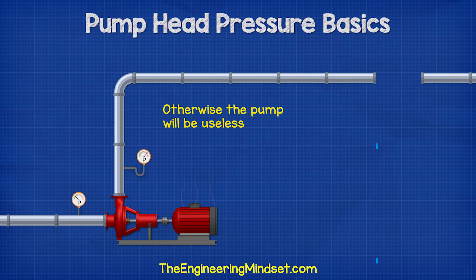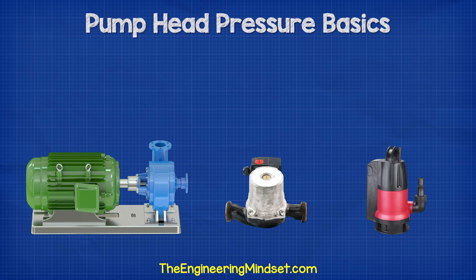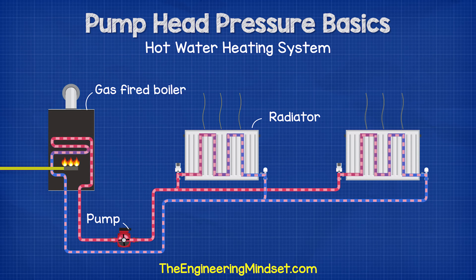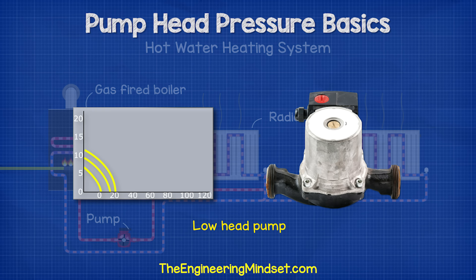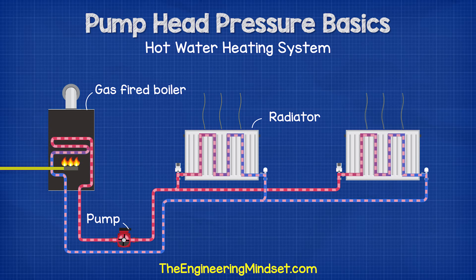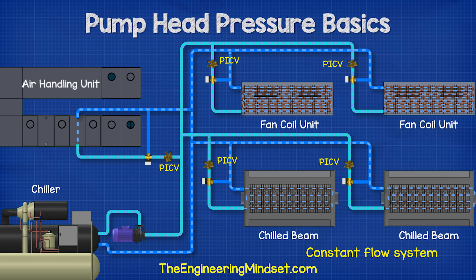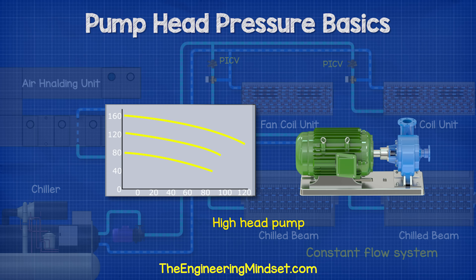Otherwise, we're not going to get any liquid out the other end. When we look at pump charts, we'll find pumps ranging in head and flow rate. For example, when we look at a small domestic heating system with a few fittings and short pipes, we would use a pump with a relatively low head pressure. But if we were to look at a commercial heating system with multiple air handling units, fan coils, and long pipe lengths, then we know the pressure drop will be much higher, so we would need a pump that can provide much more head pressure.